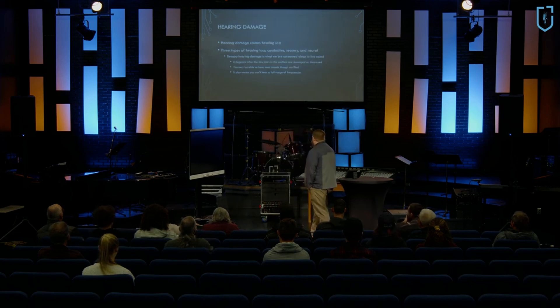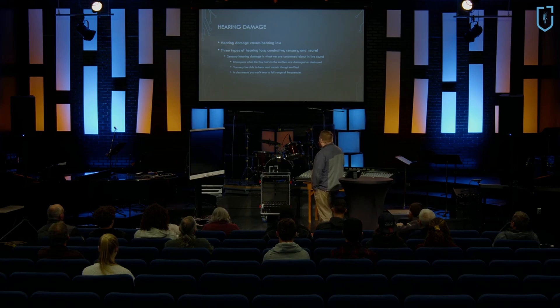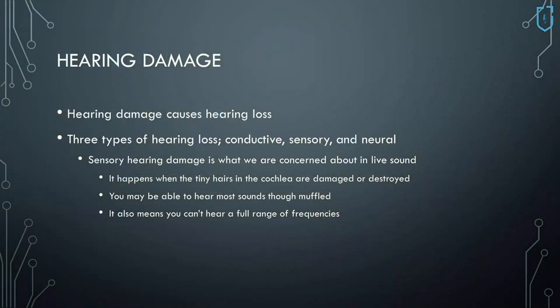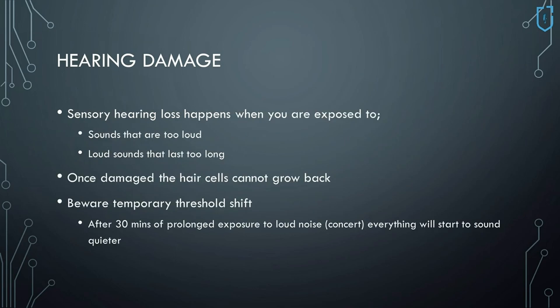Hearing damage causes hearing loss. There are three types: conductive, sensory, and neural. Sensory hearing damage is what we're concerned about with live sound. It happens when the tiny hairs in the cochlea are damaged or destroyed. You may be able to hear most sounds but they'll be muffled, and you won't be able to hear the full range of frequencies. It happens when you're exposed to sounds that are too loud or loud sounds that last too long — and once damaged, those cells can't grow back.